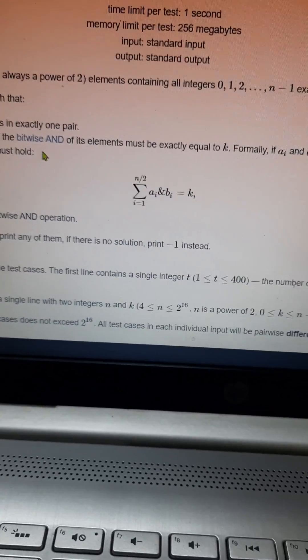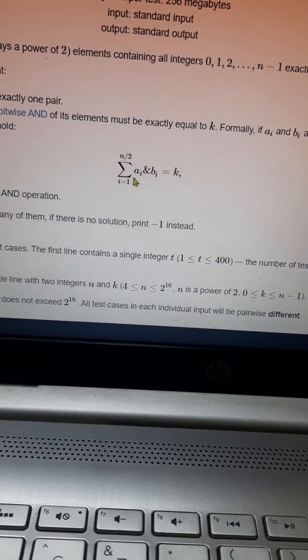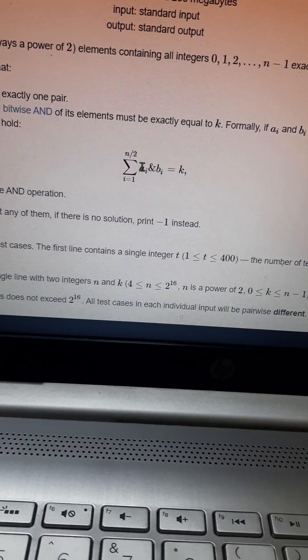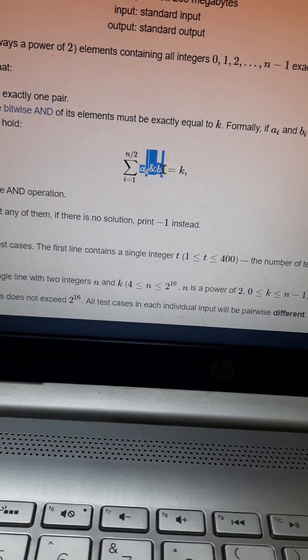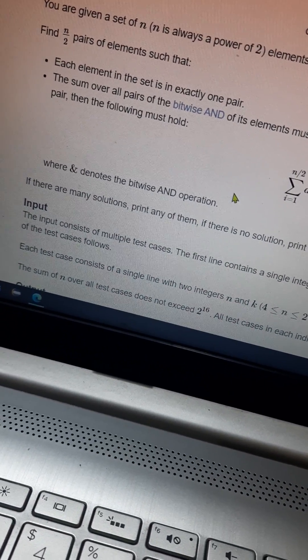The sum of (ai AND bi) values equals k, where AND denotes the bitwise AND operation. There are many solutions, print any of them. If there are no solutions available, print -1 instead.